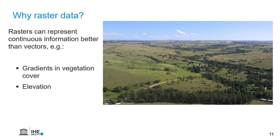If you think about hydrological modeling or environmental modeling, can you name a few more properties of this landscape that we can represent better in raster data, because they are gradients?